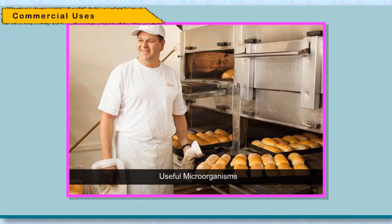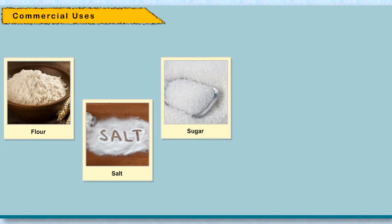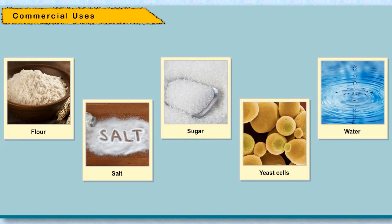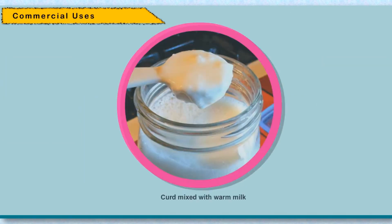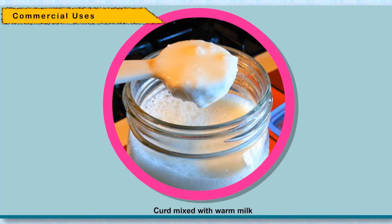Useful microorganisms — Making bread: The process of making bread involves the addition of flour, salt, sugar, yeast cells, and water kneaded into dough. Yeast reproduces rapidly and produces carbon dioxide during respiration. Due to production of carbon dioxide, the dough rises and the volume increases. When the bread is baked, carbon dioxide is released, leaving behind pores that make the bread porous and spongy.